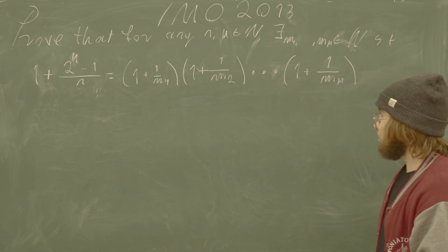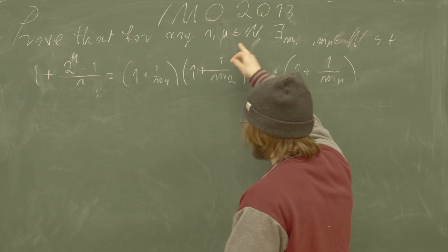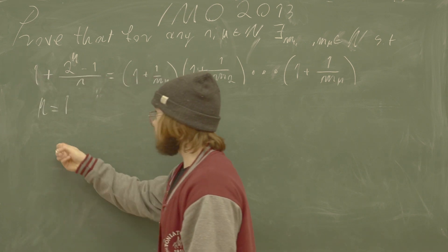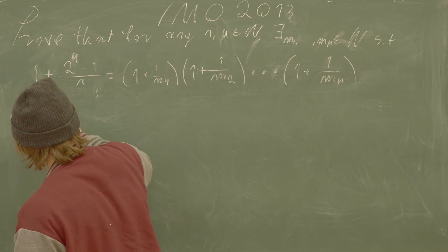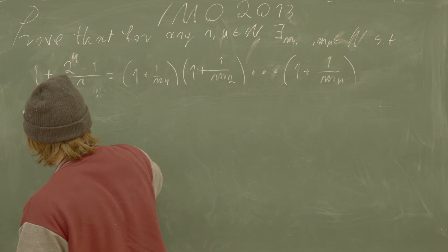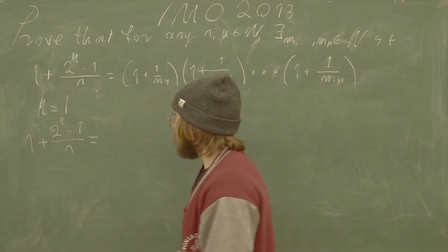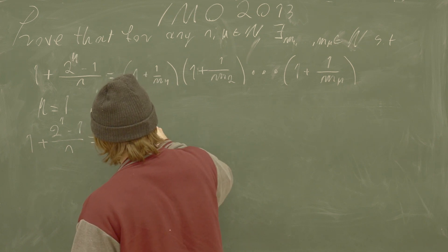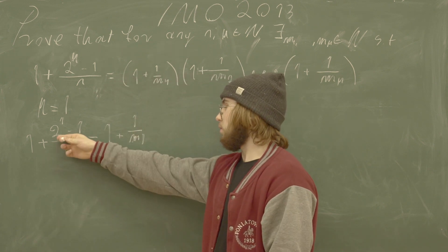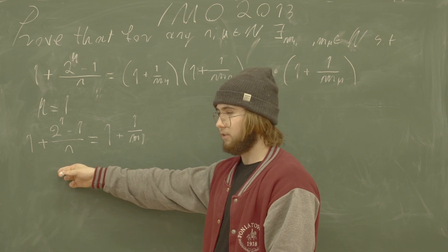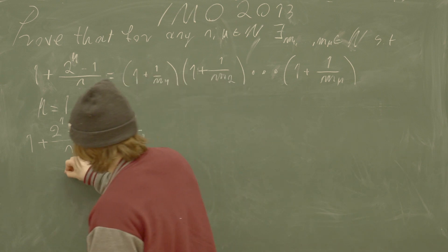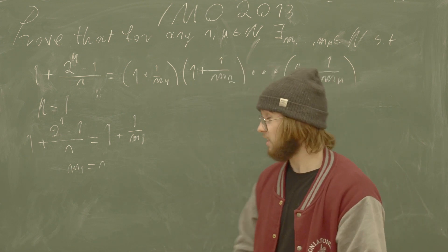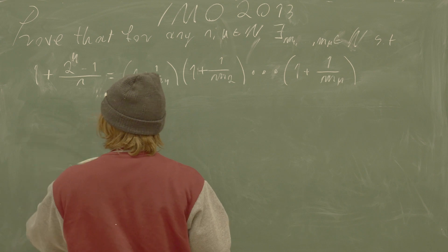If I wanted to induct on k, what should my base case be? Well, the least k I can choose is one, so the base case will be k equal to one. I'm going to get one plus two to the power of one minus one, all over n, and I'm supposed to find m₁ such that it equals one plus one over m₁. Well, two to the power of one minus one is just one, so I have one plus the reciprocal of n equals one plus the reciprocal of m₁. So I just choose m₁ equal to n, and this satisfies the base case beautifully.